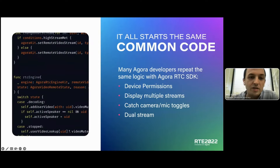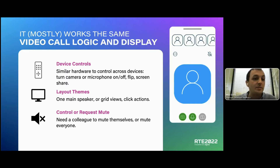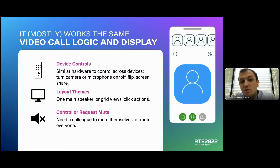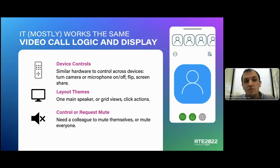There's also dual stream, which is for fetching lower bitrate video if you need to fetch lots of videos and someone's video is very small — this reduces your costs with Agora. Most video call solutions look more than 50 percent the same: you're going to display videos in a square or rectangle, maybe highlight one person as the main speaker, or have everyone in a grid view. You might want to click on people to set the main speaker, control your camera and microphone, flip your camera, share your screen, and possibly control remote users — for example, muting someone who's in a noisy environment.